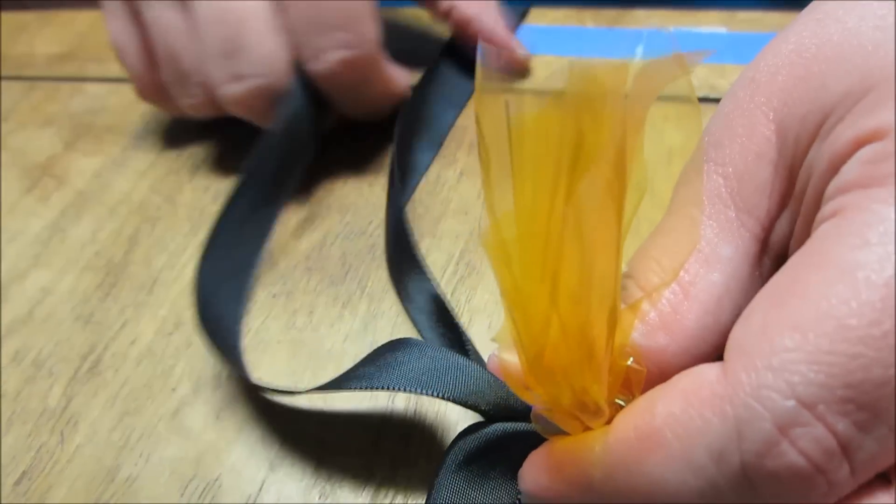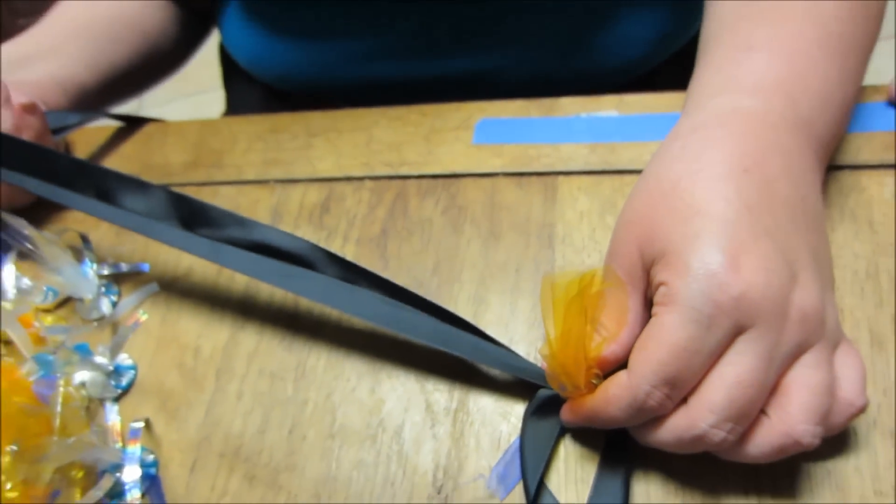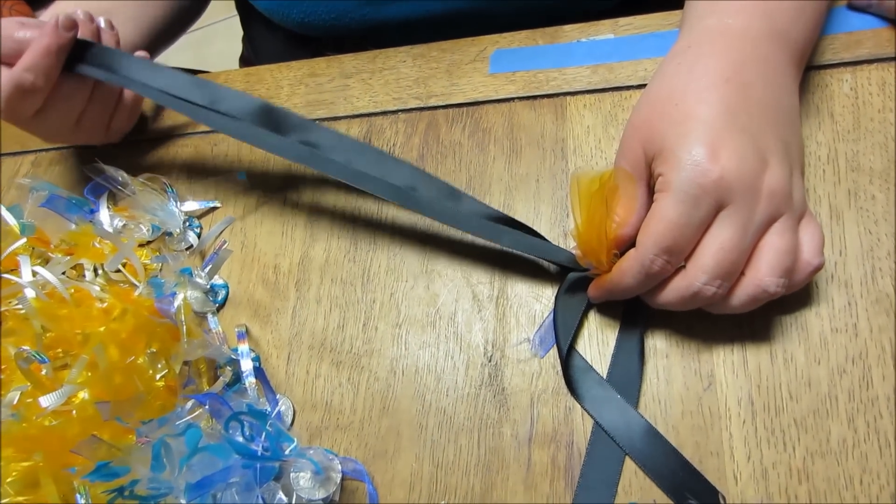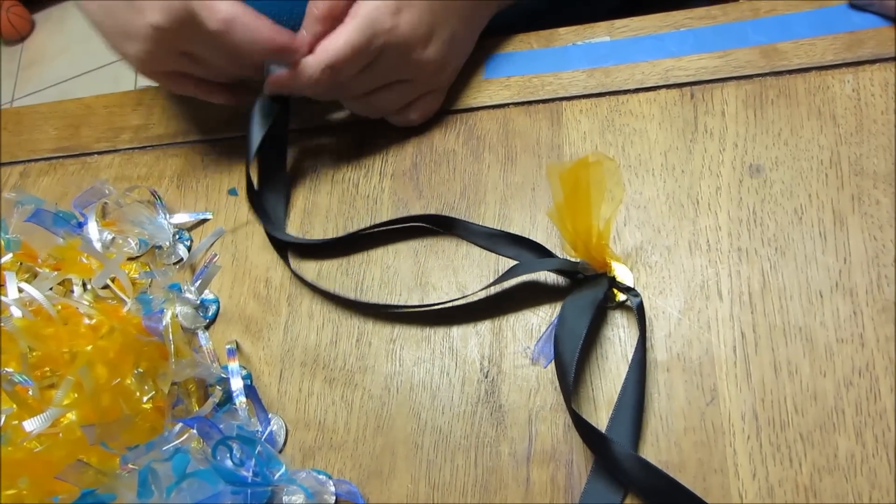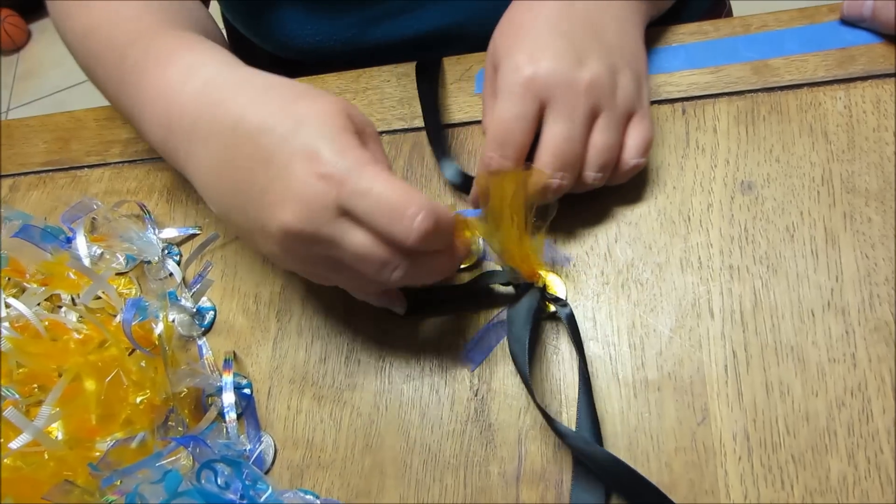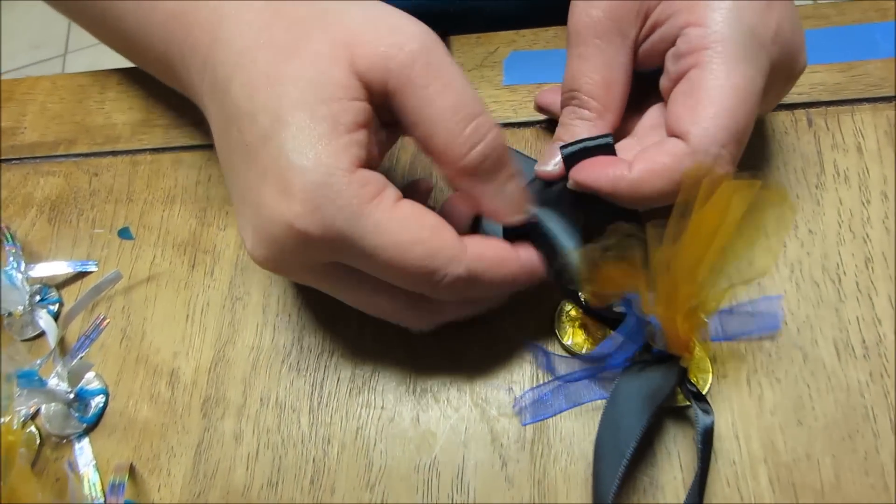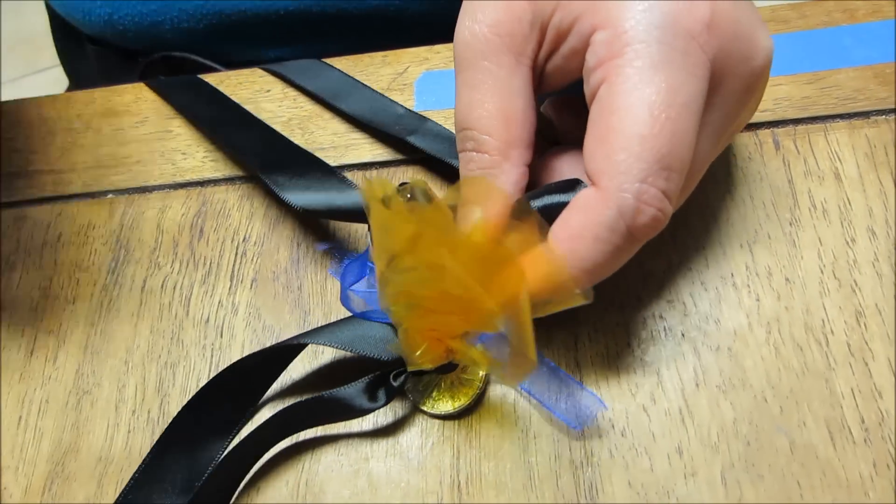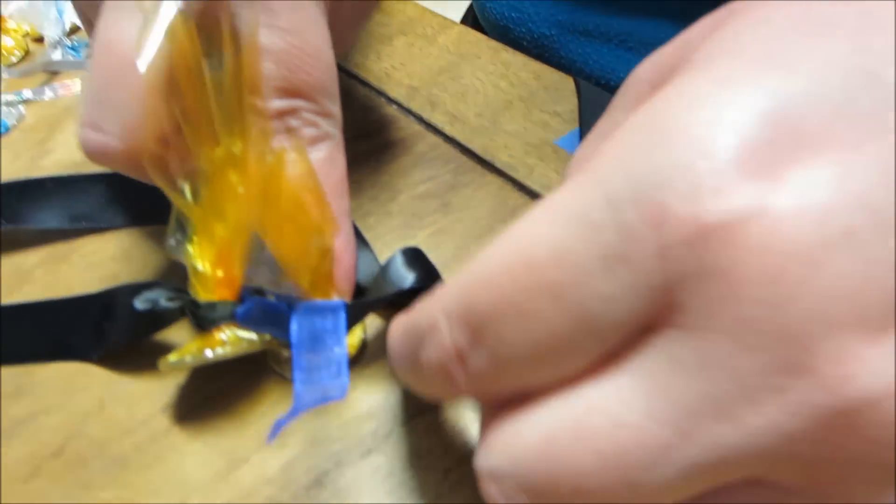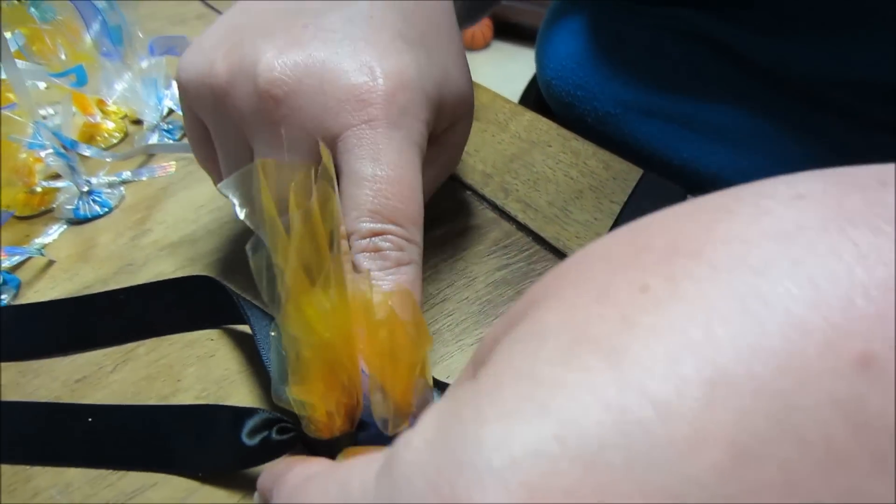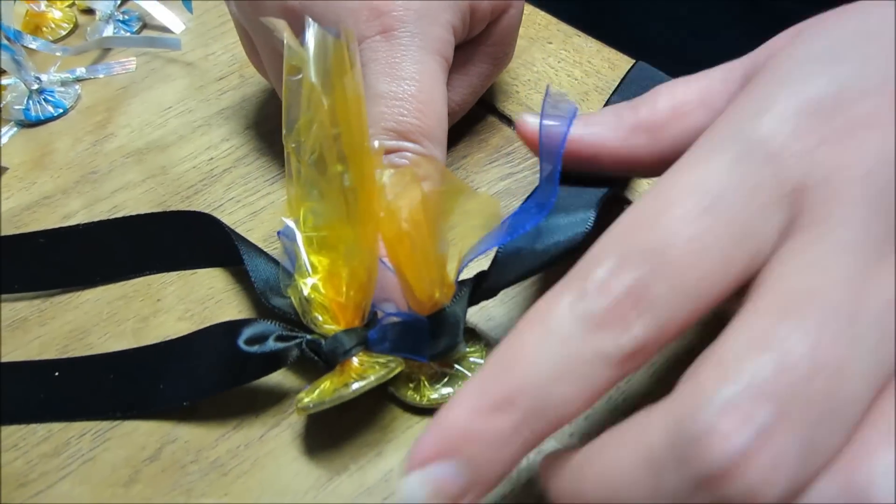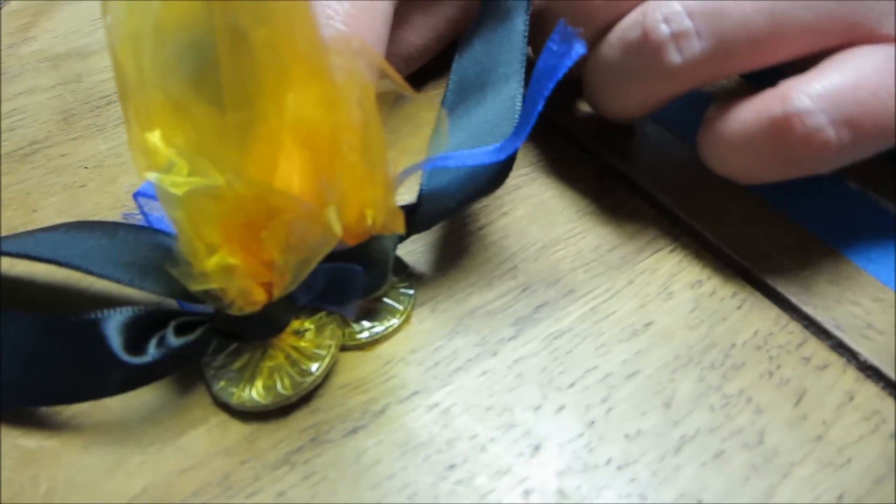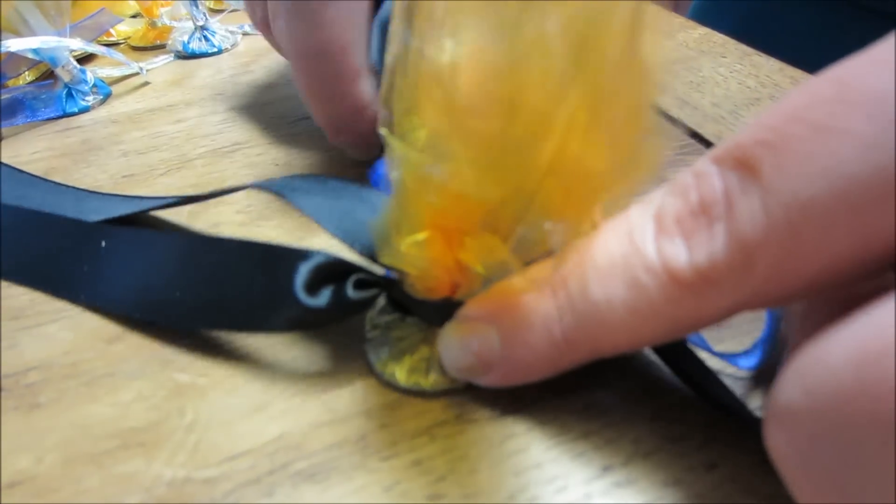That's how we're starting off our lei. The ribbon is about seven feet five inches long—this is just an estimate depending on how long you want the lei. Just continue on adding in coins.